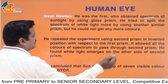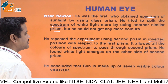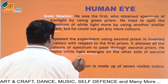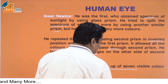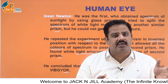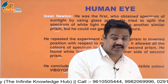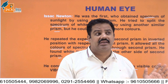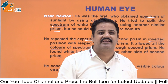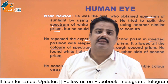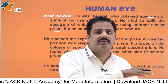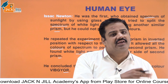He repeated the experiment using the second prism in an inverted position. It allowed all colours of the spectrum to pass through, and he found white light emerging on the other side. He concluded that sunlight consists of seven visible colours only. When the prism is inverted, the seven colours recombine back into white light — meaning you cannot get more than seven colours no matter how many times you disperse the light.